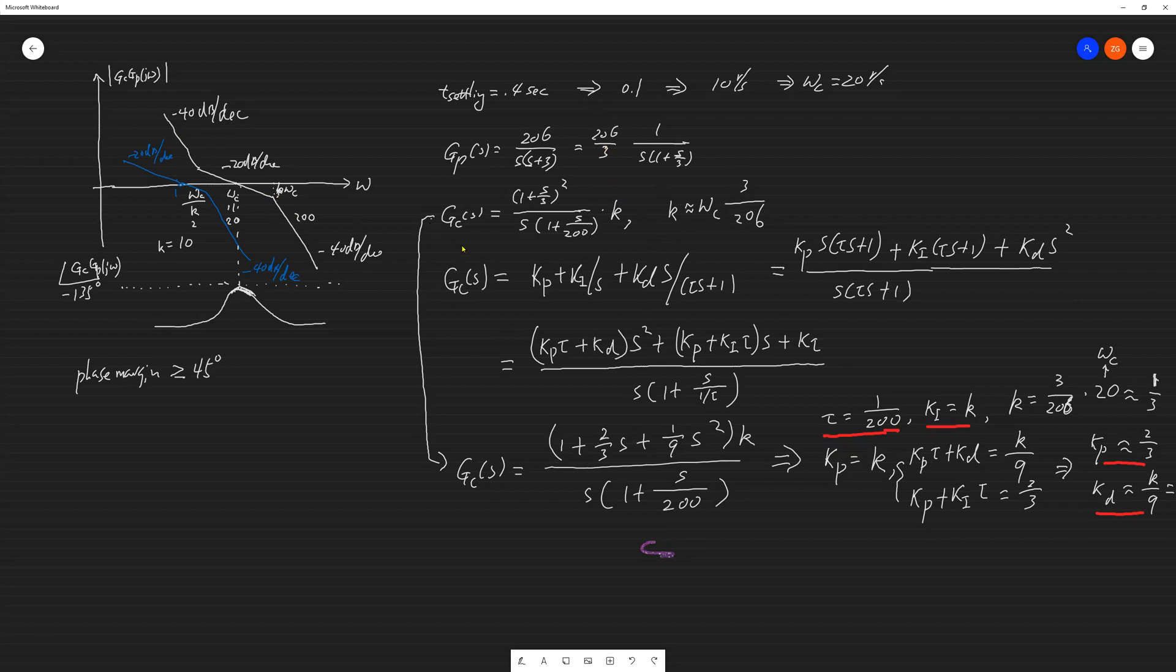And today we are interested to turn this into PID gains. And the way we do that is to select a PID form. This is the PID with approximate differentiation. And you turn this into a numerator over denominator, clean up the coefficients.